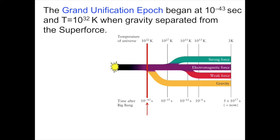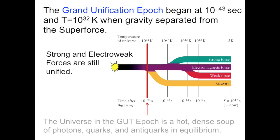By the time the 10^-43 second Planck era ends, when the temperature reaches about 10^32 degrees Kelvin, gravity separates from the super force. And now there are two forces at work in the universe: gravity, and a combination of the strong, weak, and electromagnetic force called the grand unified theory, or gut force. The strong and electroweak forces are all still unified.